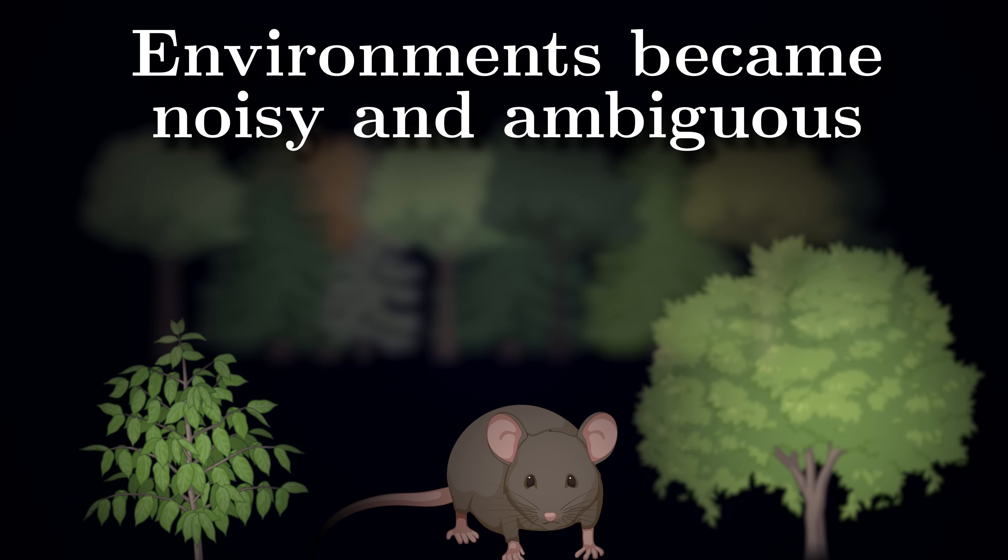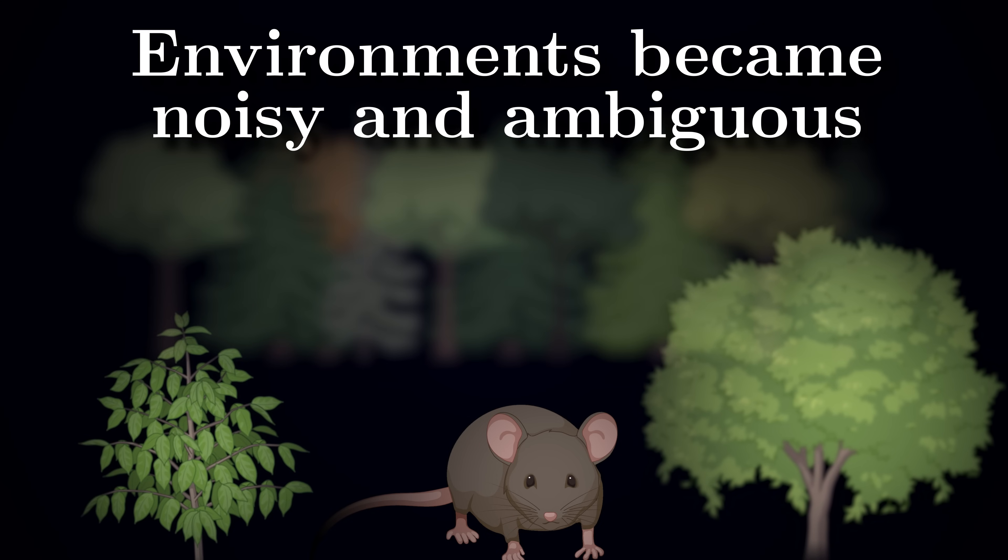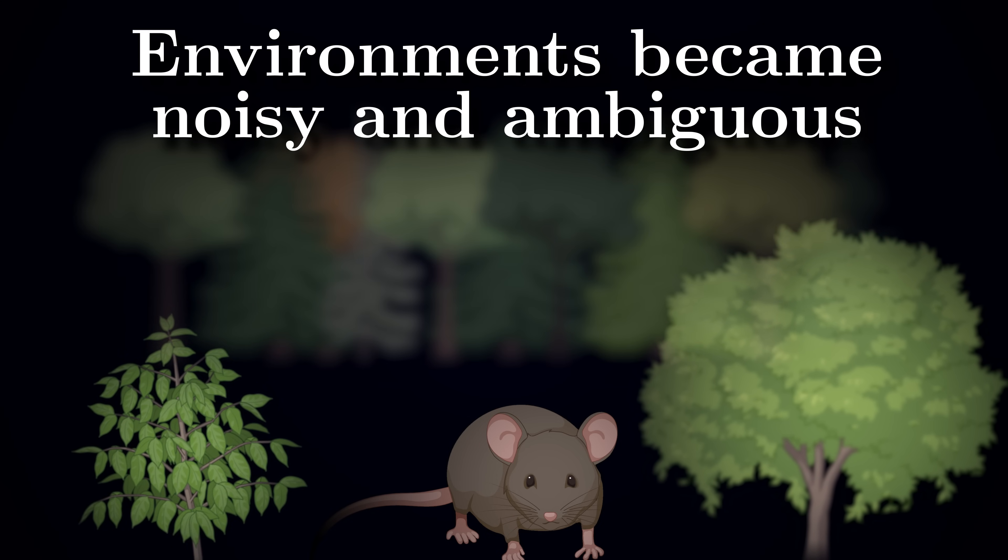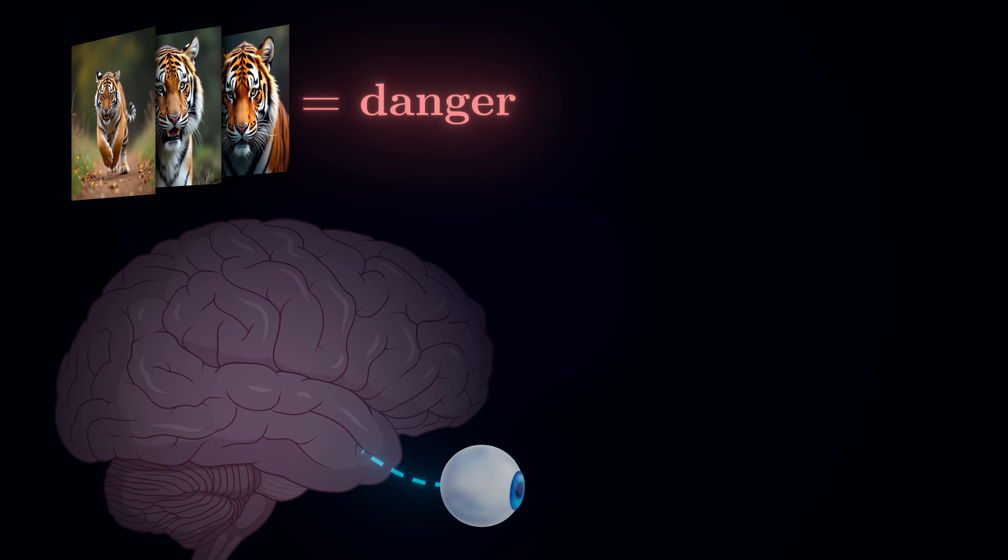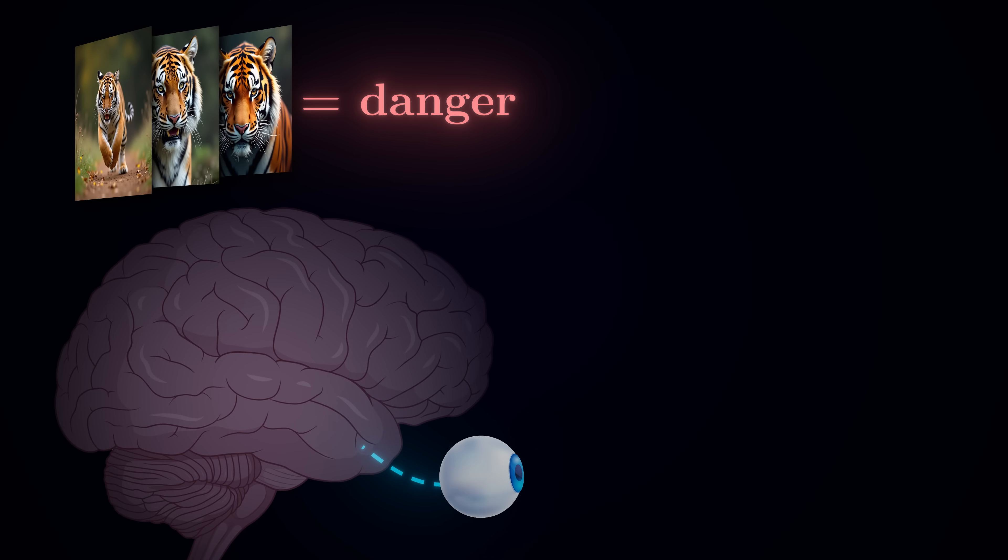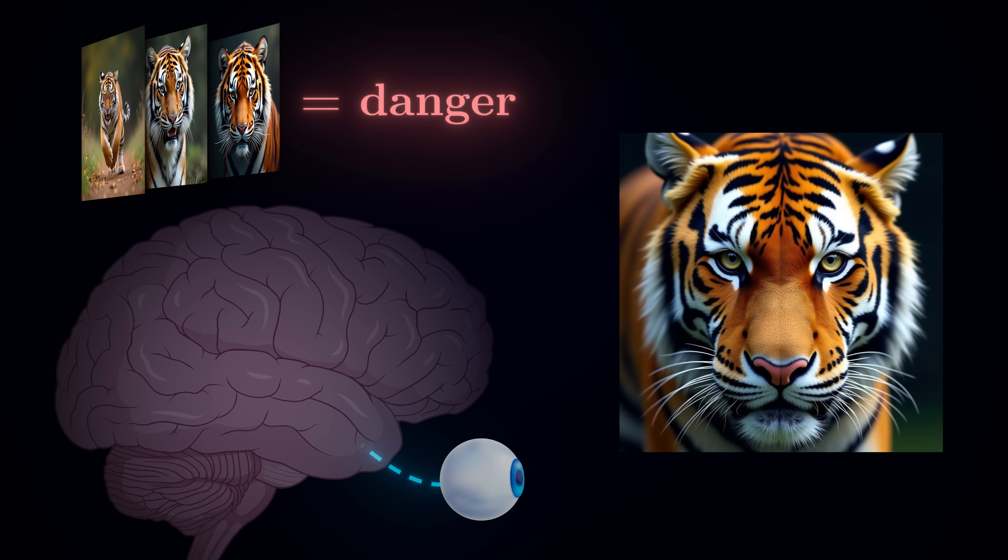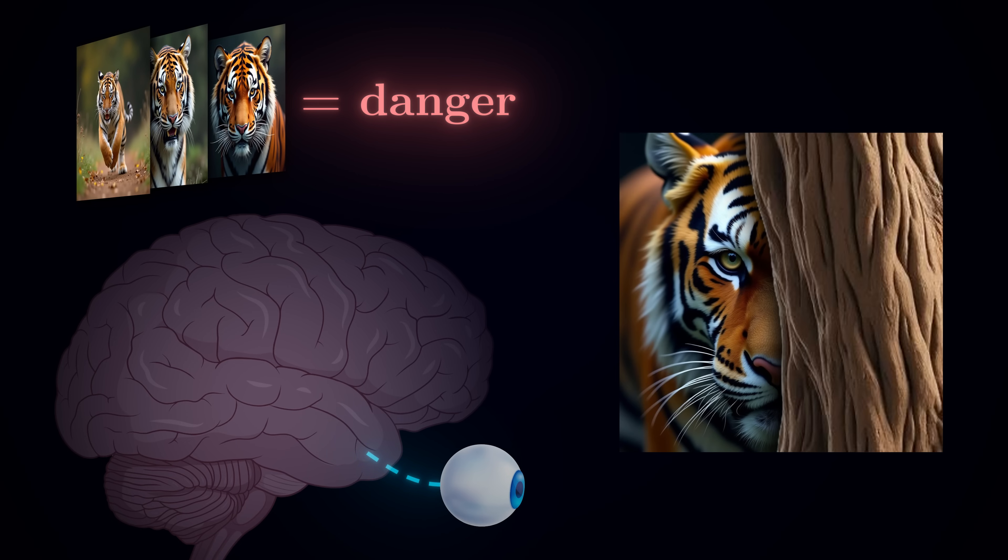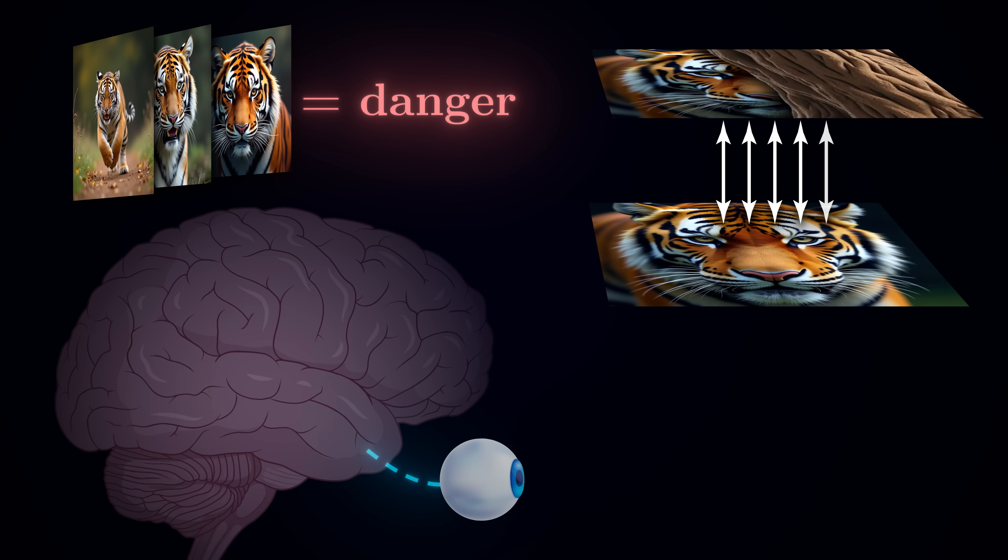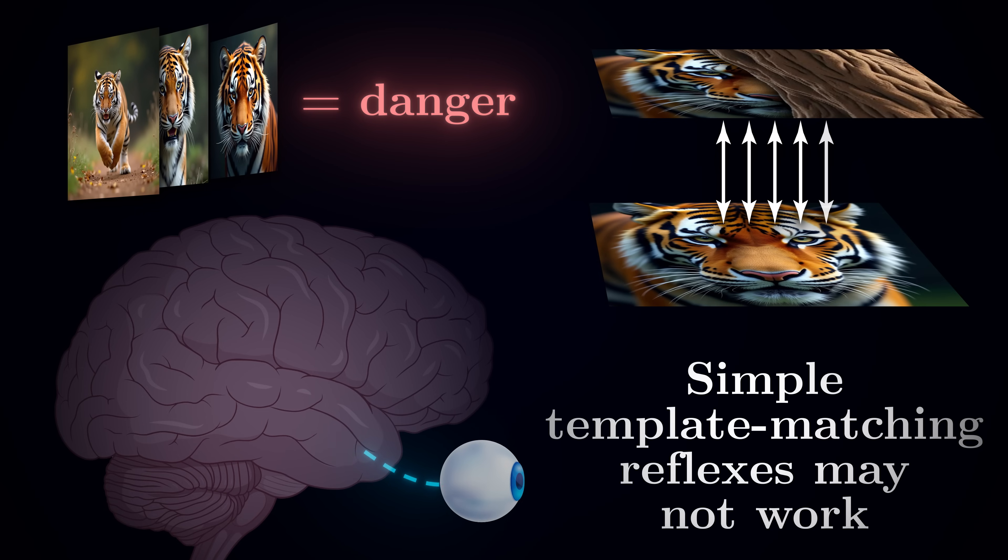However, as organisms began to inhabit more complex environments, they faced a challenge of the outside world being noisy, ambiguous, and often providing only partial information. For instance, let's say that over the course of your lifetime, you learned that tigers mean danger and should be avoided. To your brain, a tiger is essentially any pattern on the retina that looks similar to this. Now suppose one day your retina registers a pattern of activity that looks like this.